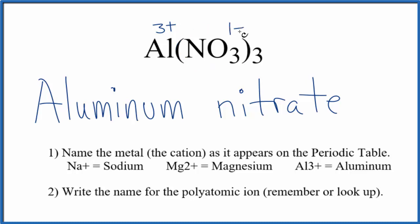So you can see, for this to balance out and equal zero, have a net charge of zero, we need three of these 1- nitrate ions to balance the 3+ on the aluminum ion.